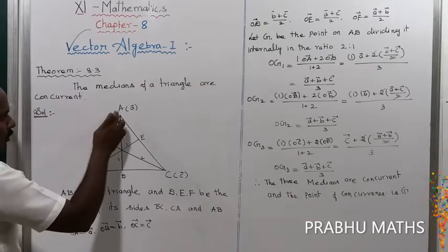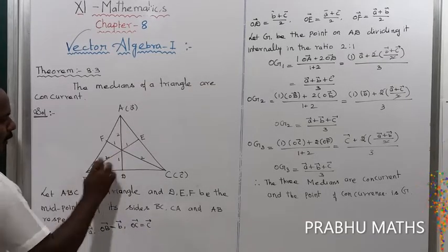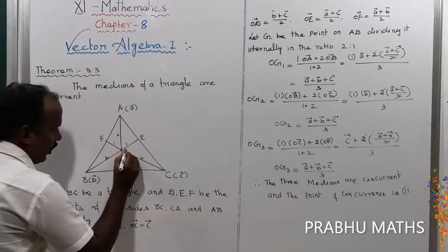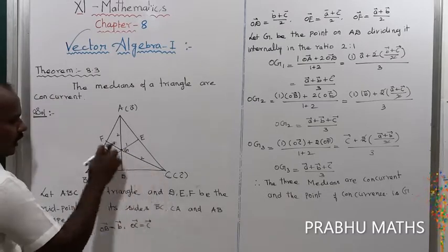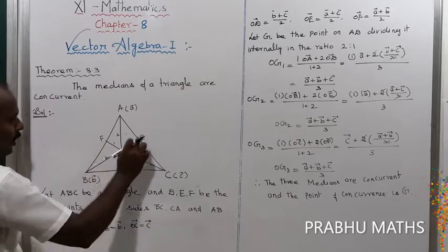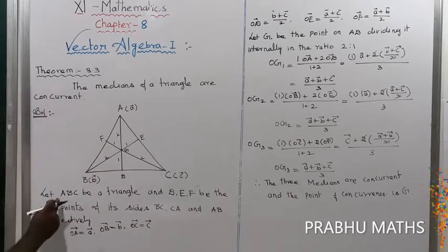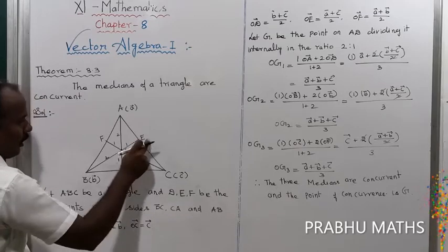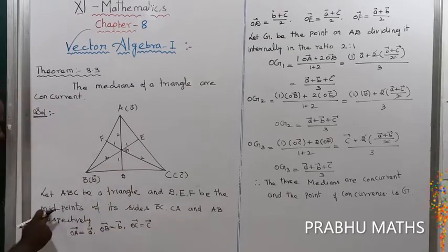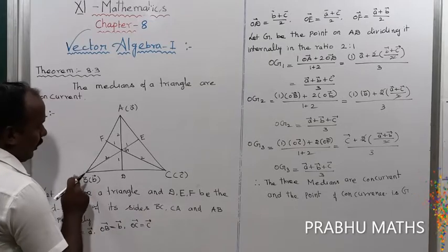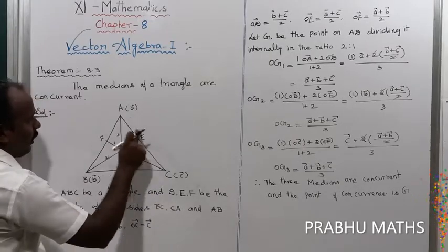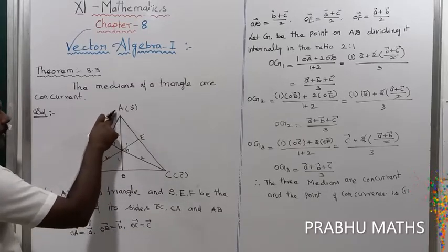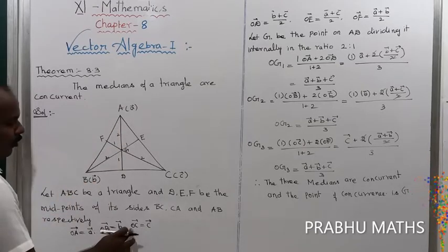The three medians are AD, BE, and CF, and their center point is G. Let G1 be on AD, G3 on CF, and G2 on BE. For triangle ABC, D, E, F are the midpoints of the sides: D is the midpoint of BC, E is the midpoint of AC, and F is the midpoint of AB. The position vectors are: OA = A vector, OB = B vector, OC = C vector.